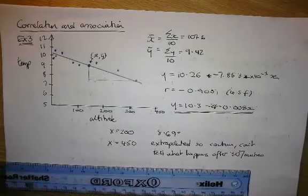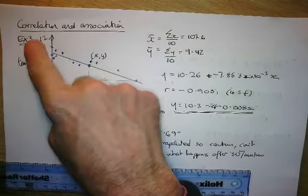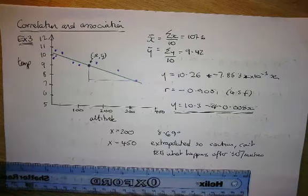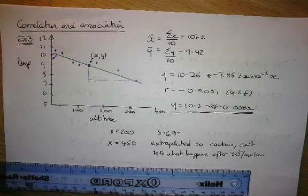In this question we're looking at correlation and association, specifically exercise 3 on Integral Maths in the A-level stats section. Question 1 gives the altitude in meters above sea level and the mean air temperature y in degrees centigrade for 10 weather stations.